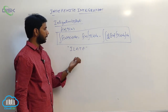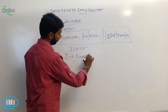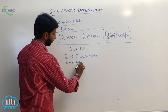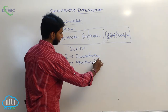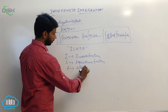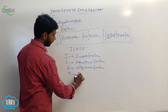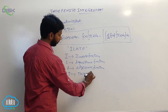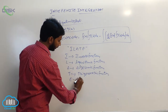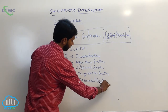The first function is considered from the word ILATE, where I equals inverse functions, L is logarithmic functions, A means algebraic functions, T means trigonometric functions, and E means exponential functions.